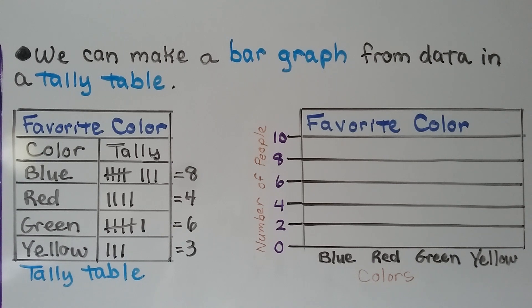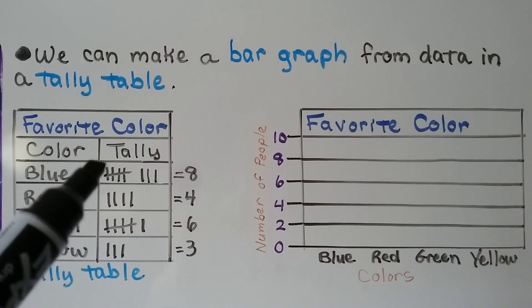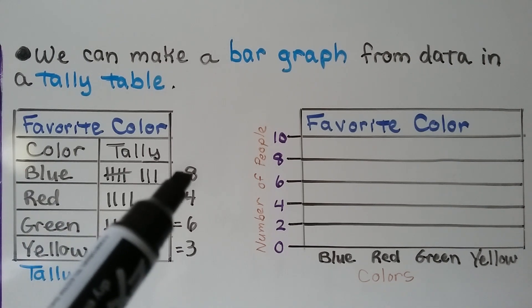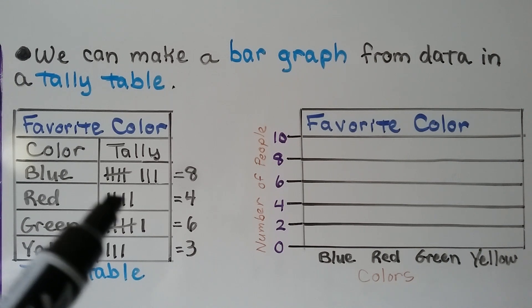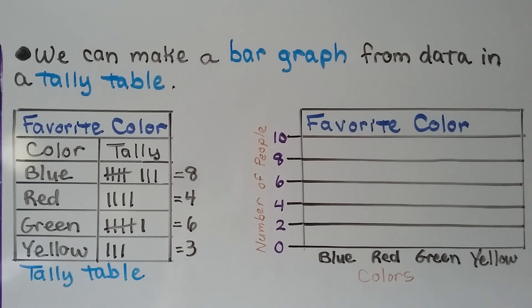We can make a bar graph from data in a tally table. We look at our tally table and count the tally marks. For blue, we have 5, 6, 7, 8. For red, we have 1, 2, 3, 4. For green, we have 5, 6. And for yellow, we have 3.